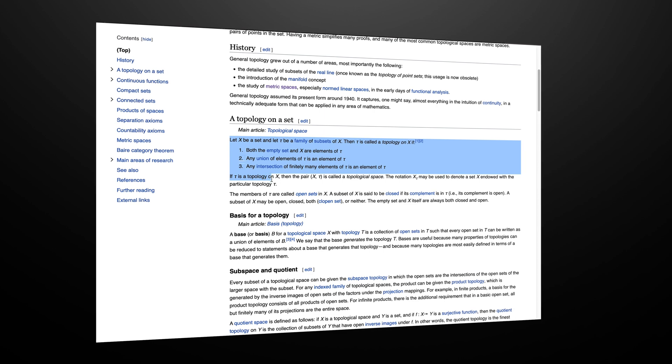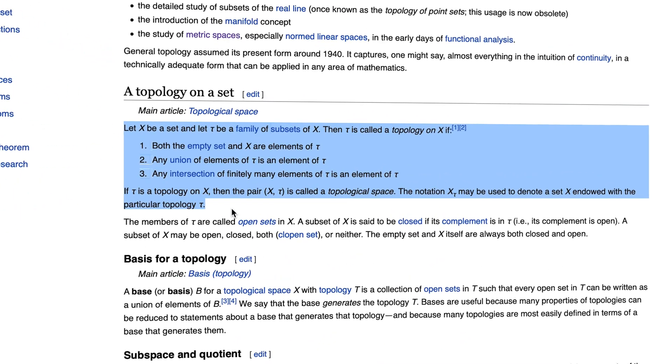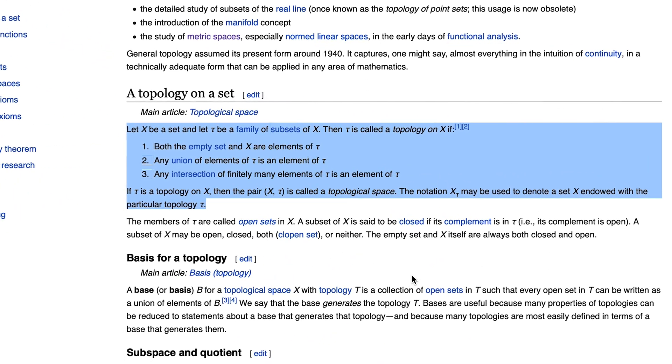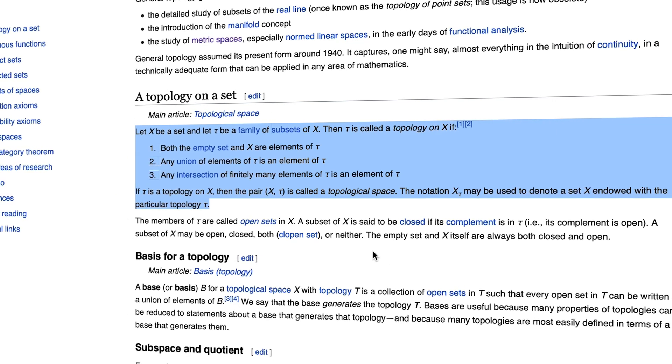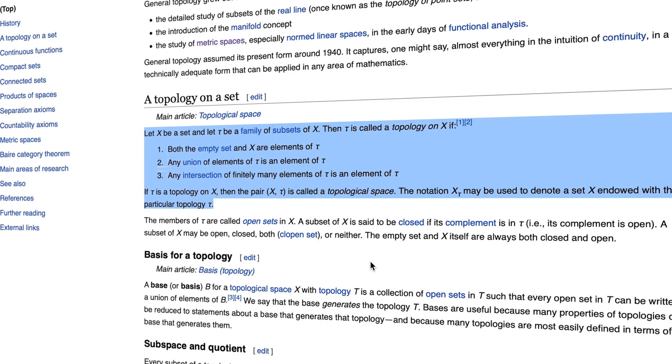In topology, we start with a set X and a collection of subsets we declare as open. The requirement we have on those sets is that we want arbitrary unions to be open and finite intersections to be open as well. Then closed sets are defined as their complements. I think we also need to have the entire set X and the empty set to be included in the collection of open sets too. This distinguishes Fréchet and Hausdorff's perspectives on topology from the early 20th century.